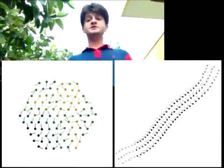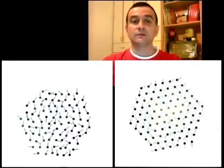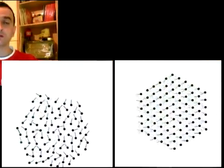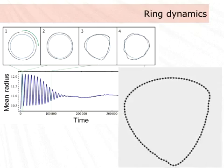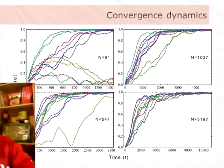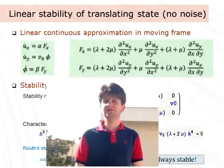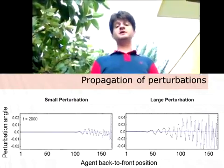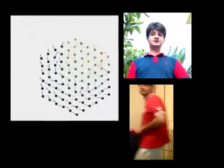Our work explores different aspects of the active elastic sheet model. First, we investigate its dynamics for different parameters and agent configurations. Second, we analyze its convergence to collective motion as a function of system size. Third, we derive analytical stability conditions for the translating state in a continuous elastic sheet approximation. Fourth, we study the propagation of perturbations. And fifth, we show that collective motion is achieved even in heterogeneous systems where each agent has a different self-propulsion speed.